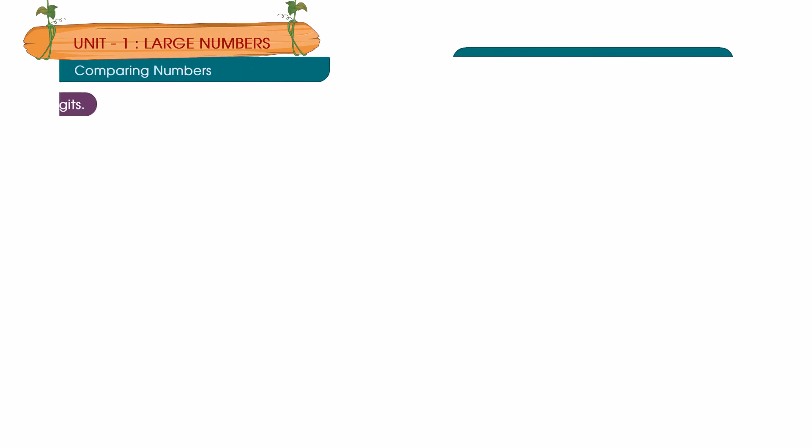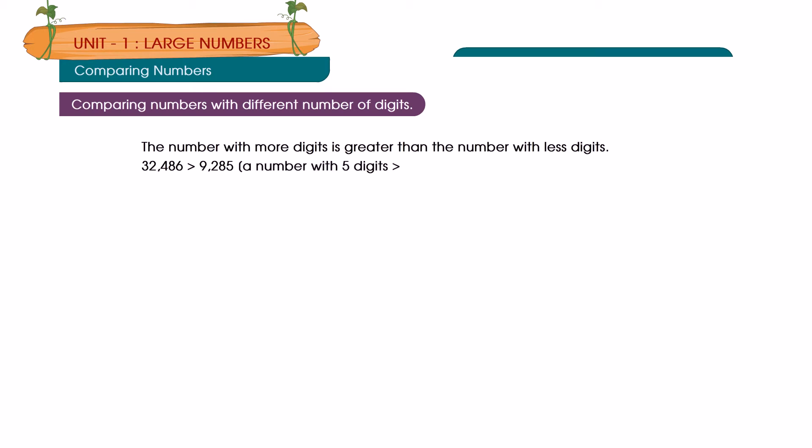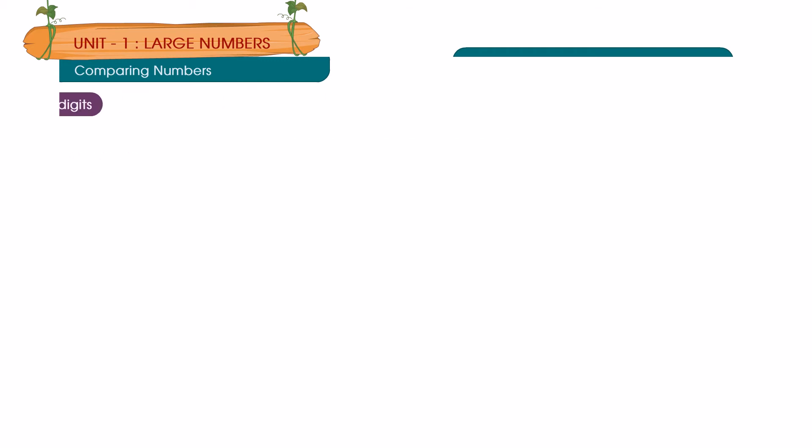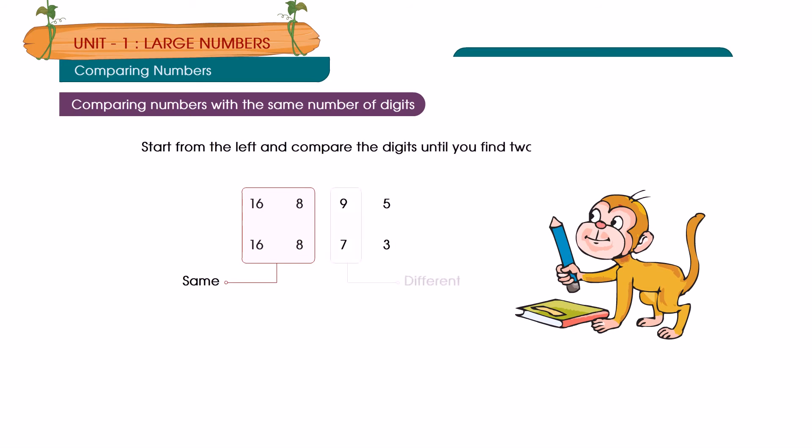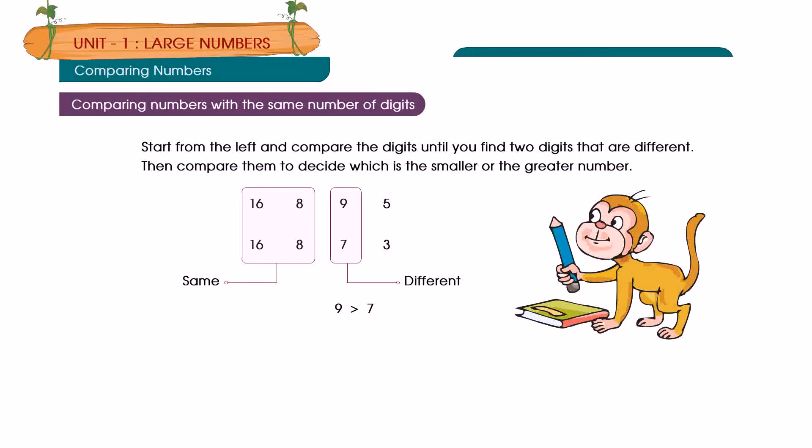Comparing numbers: Comparing numbers with different number of digits - The number with more digits is greater than the number with less digits. 32,486 is greater than 9,285. A number with 5 digits is greater than a number with 4 digits. Comparing numbers with the same number of digits: Start from the left and compare the digits until you find two digits that are different. 9 is greater than 7, so 16,895 is greater than 16,873.